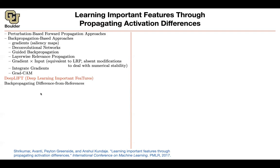Deep lift is based on backpropagation, but what you are backpropagating are not gradients and not relevancies — they are differences from some reference. You're going to have a reference input; for instance, it could be a black image where all of your pixels are set to an intensity value of zero. You have a neural network that you want to analyze, and then you pick one of its predictions.